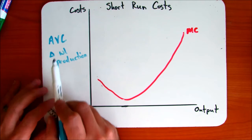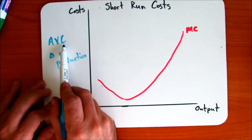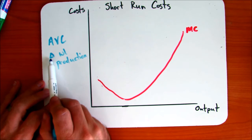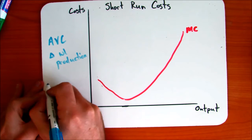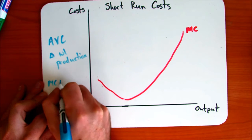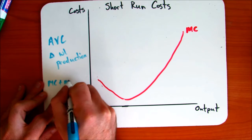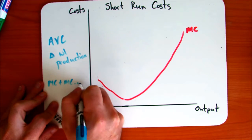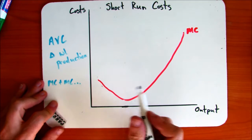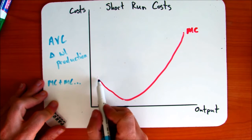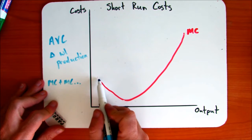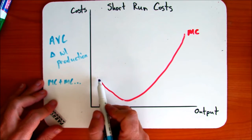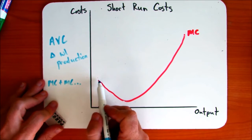Next, let's look at average variable costs. Remember, these are the ones that change with production, and mathematically they're all the marginal costs added together. So obviously, because they're all the marginal costs added together, they have to start with marginal costs, although that's not a critical part of the theory.